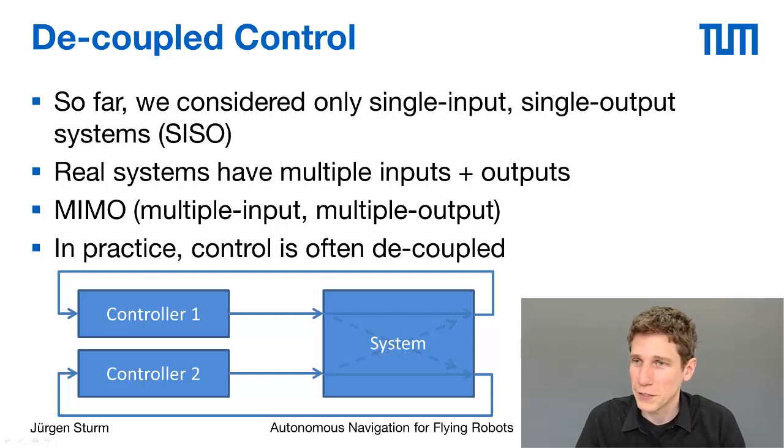Another problem is that we generally not only have one degree of freedom that we try to control, but typically multiple. In case of the AR drone we have 4 degrees of freedom. We can go forward, sidewards, we can rotate and we can change the flying height. This is common with many systems. This is called a MIMO system - Multiple input, multiple output.